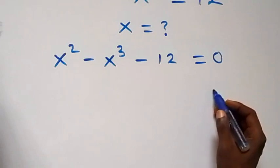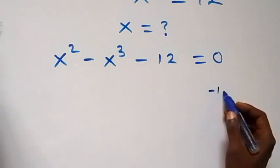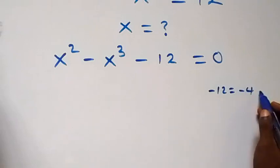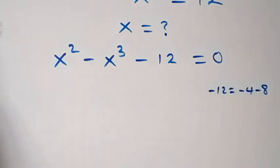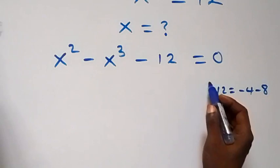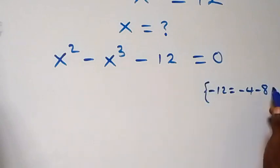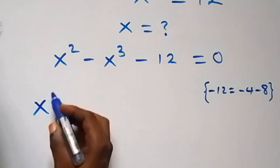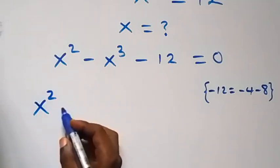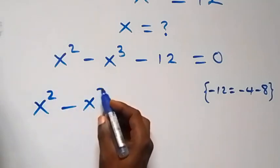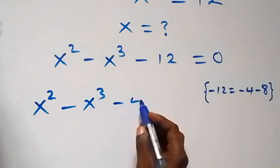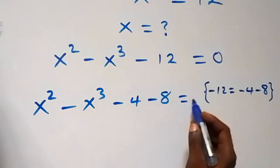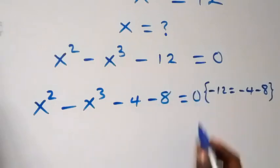From here we can write minus 12 as minus 4 minus 8. Then what we have now we can write as x squared minus x cubed minus 4 minus 8, now equals to zero.